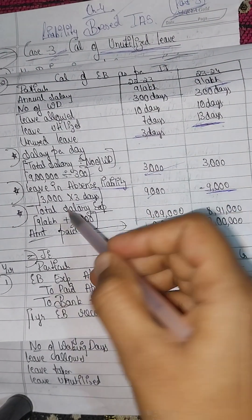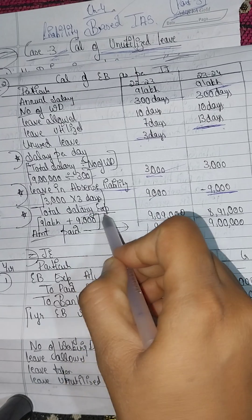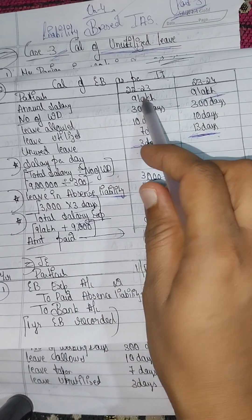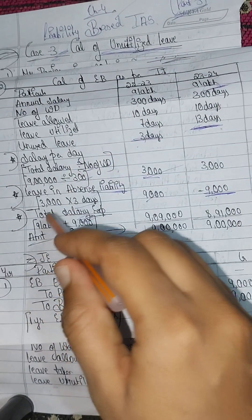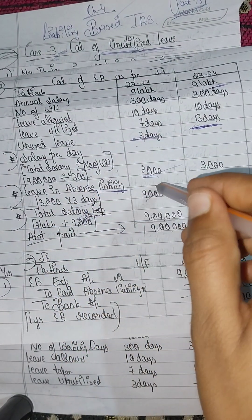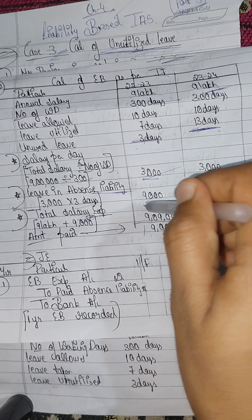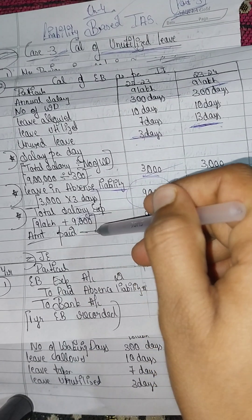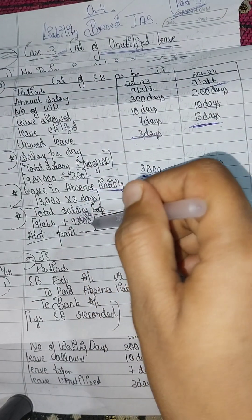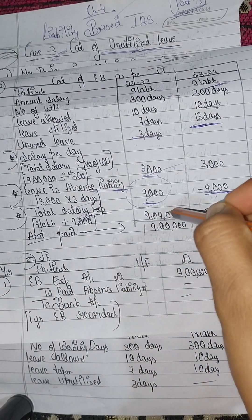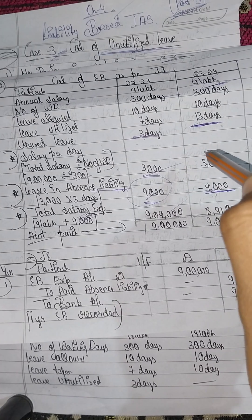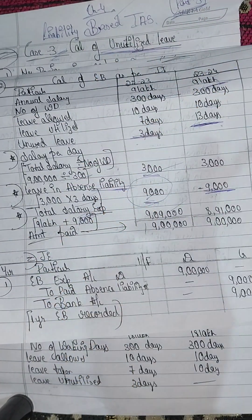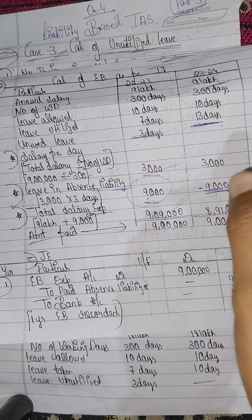The total gross salary is 9 lakh. Adding the cash value of unutilized leaves of 9,000, the total for the first year comes to 9,09,000 rupees.